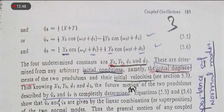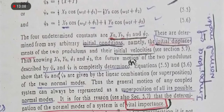psi_a میں x اور y کی value put کریں: psi_a is equal to 1/2 [x_not cosine(omega_1 t + phi_1) minus y_not cosine(omega_2 t + phi_2)]، اور psi_b میں دونوں add ہوں گے۔ یہاں پر ہمارے پاس 4 determined constants آتی ہیں: x_not، y_not، phi_1، phi_2۔ These are determined from any arbitrary initial conditions, namely the initial displacements of the two pendulums and their initial velocities۔